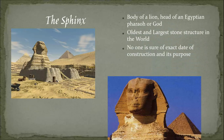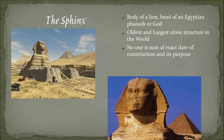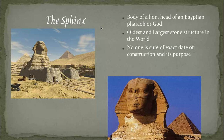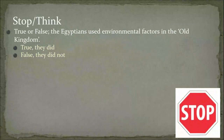Another thing made out of environmental factors is the Sphinx, which is a ginormous structure that looks like a cat with a man's face. Nobody really knows what it's for, but it has tunnels leading into it, and they found boats buried in front of it. It's also considered one of the wonders of the world. First question: true or false — the Egyptians used environmental factors in the Old Kingdom.